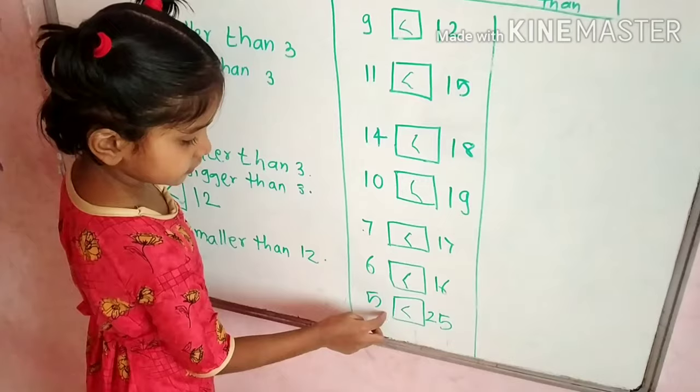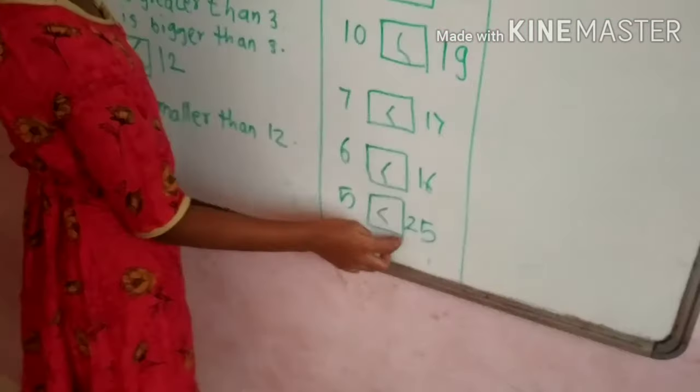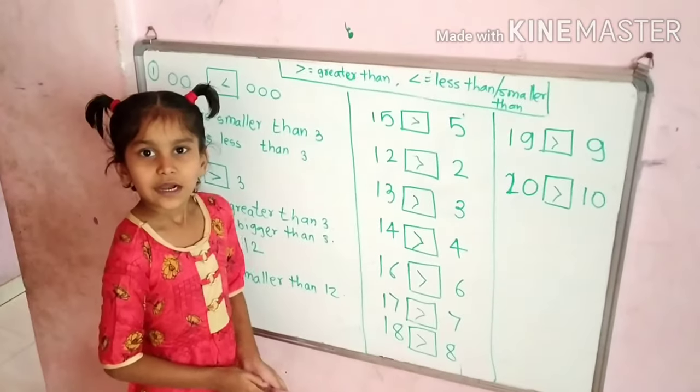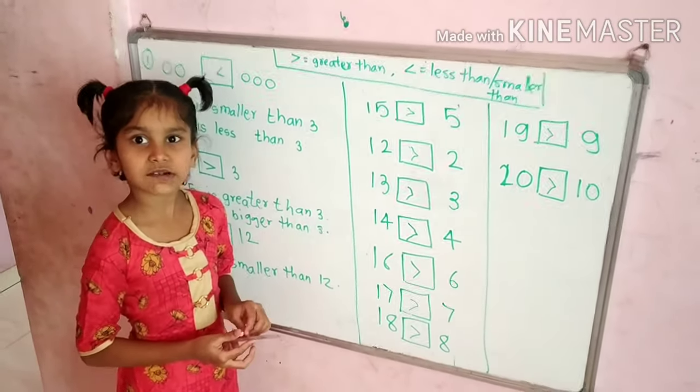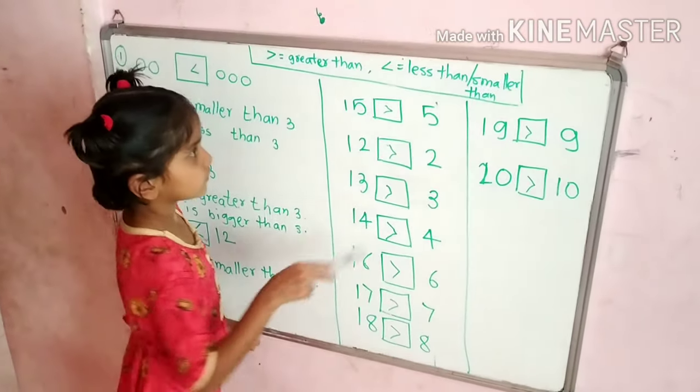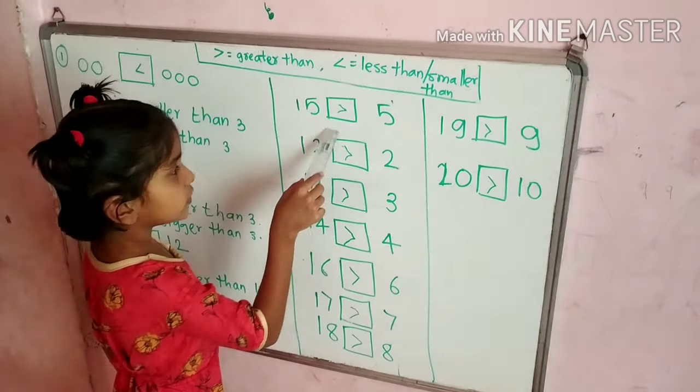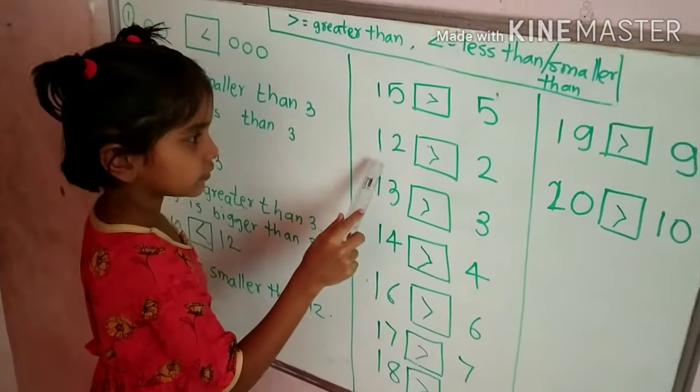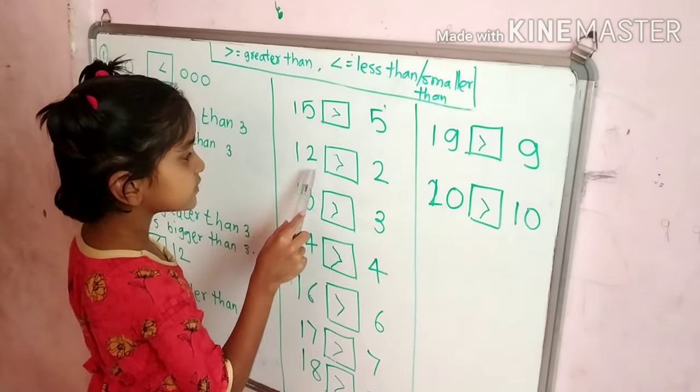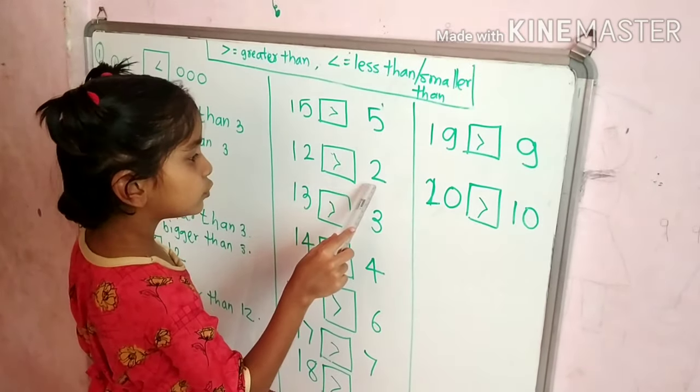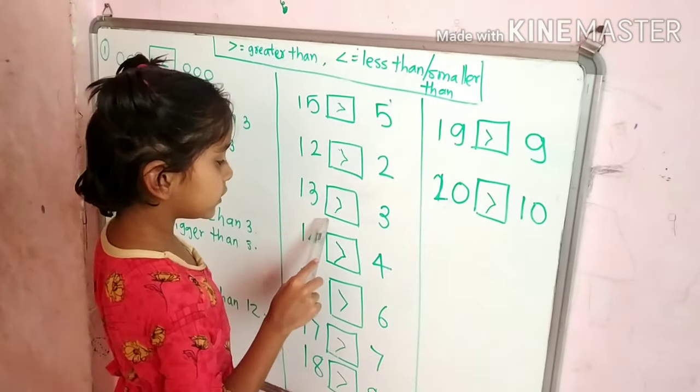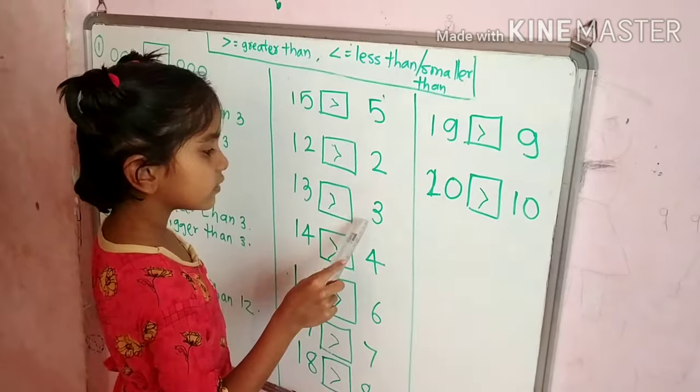5 is smaller than 25. Now let's do greater than. 15 is greater than 5. 15 is greater than 2. 13 is greater than 3.